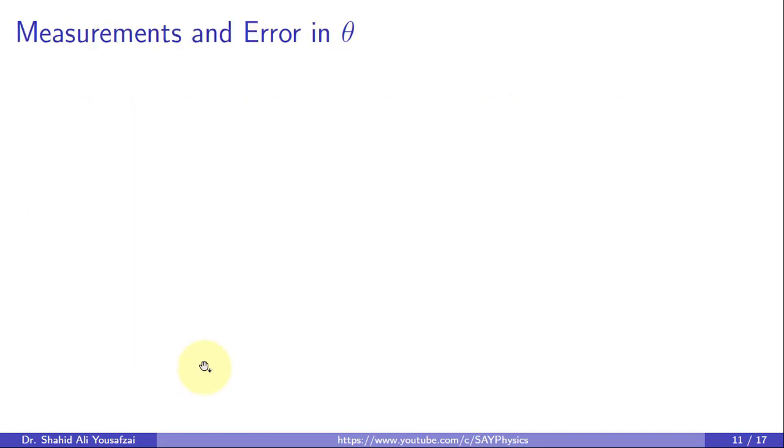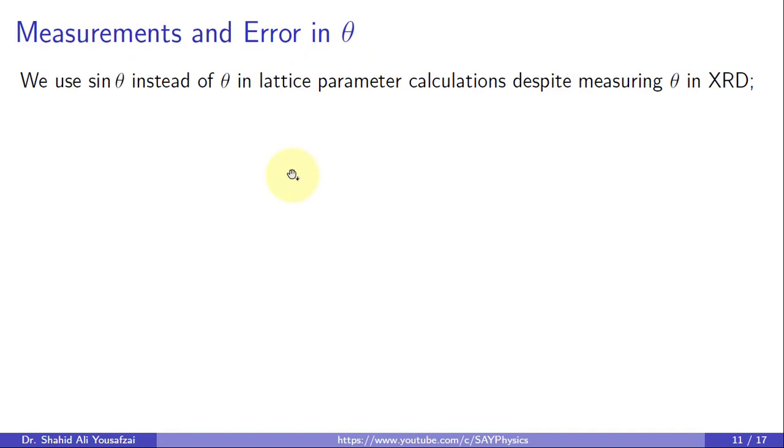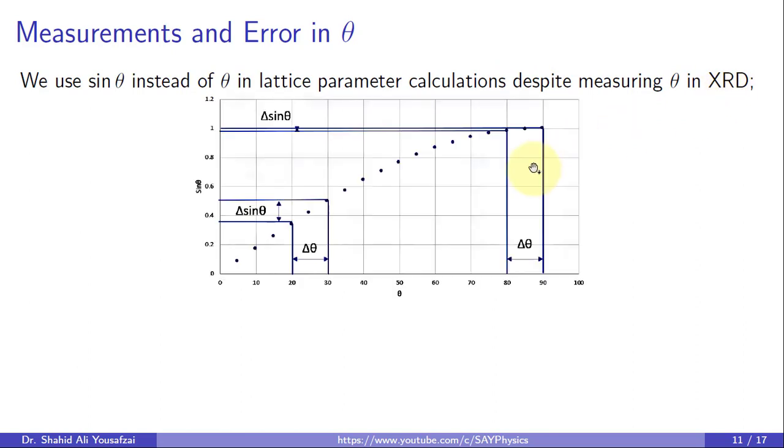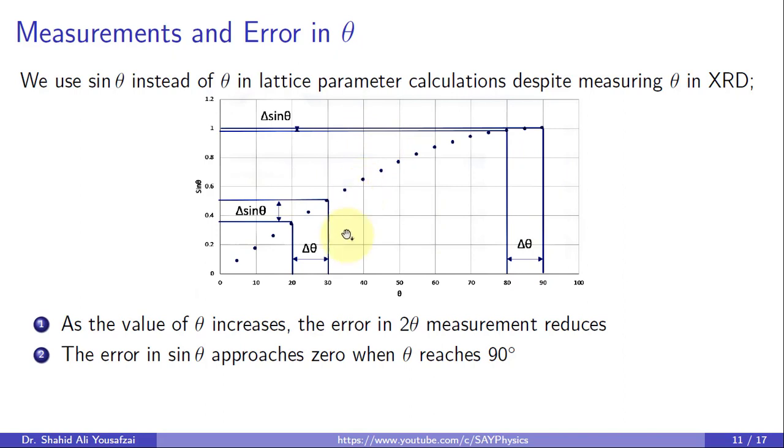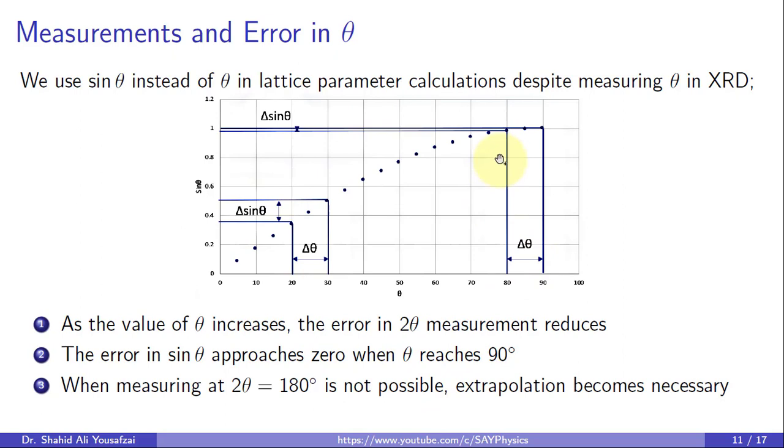In this section, we will discuss the role of θ values in our measurements. As we use sin θ instead of θ in lattice parameter calculations, the error will further minimize at higher values of θ. The error in sin θ approaches almost zero as the angle goes closer to 90 degrees. Thus, for the determination of the lattice constants, we will prefer higher angle values.